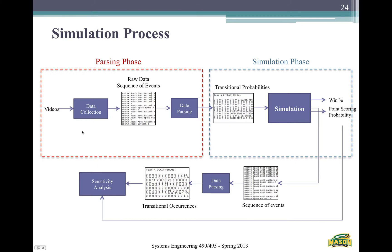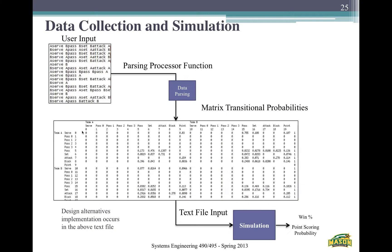From the simulation output, we can parse transitional occurrences and perform a sensitivity analysis. The user input is parsed into a matrix, and you can change design alternatives from the transient state — for example, a serve going to a point (column 9, point for team A) has a probability of 0.03. We then played a video demonstration of the simulation.